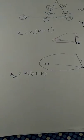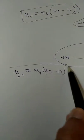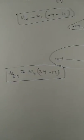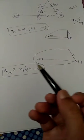So here we have found 2 velocities. First, with respect to link 2, and then with respect to link 4.